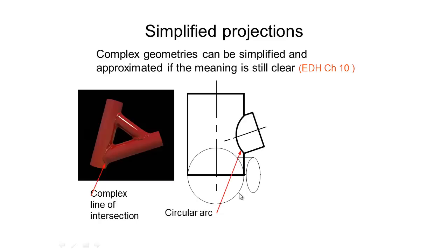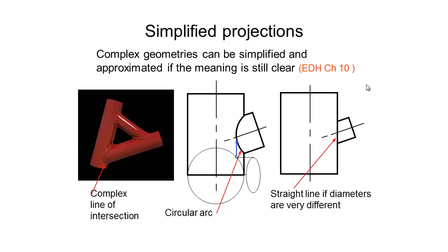The easier way of doing this would be to just draw a circular arc at the intersection. To get this we would draw the plan view and transfer the point where these two parts coincide across. If the diameter of the two tubes that are intersecting are quite different, we could just represent the intersection with a straight line. According to the Australian standards this is all we need to do.